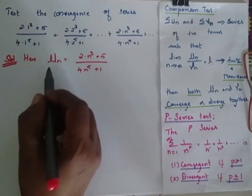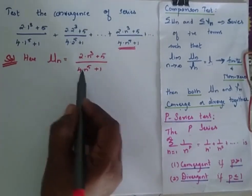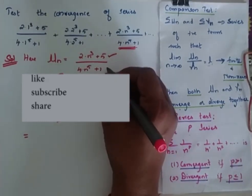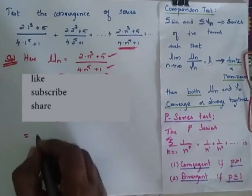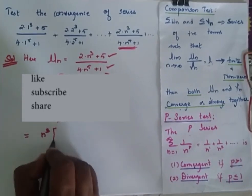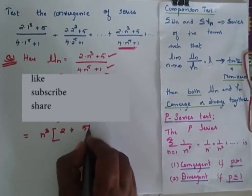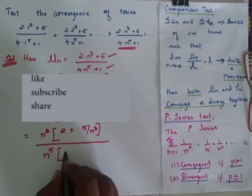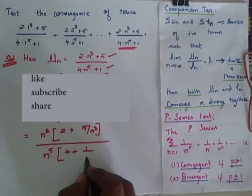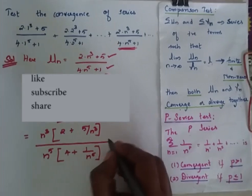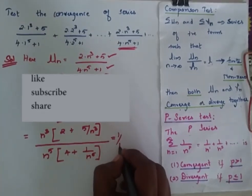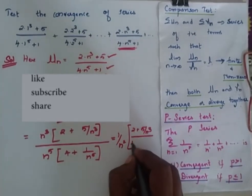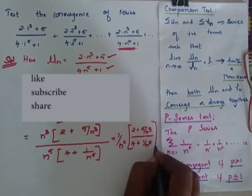Now, this is my un — the general term I have here. In the numerator, I am going to take n cubed out commonly, and in the denominator, I am going to take n power 5. So when I factor out n cubed from the numerator, I get 2 plus 5 by n cubed. In the denominator, taking n power 5 commonly outside, I get 4 plus 1 by n power 5. Simplifying, I get 1 by n squared into (2 plus 5 by n cubed) by (4 plus 1 by n power 5).